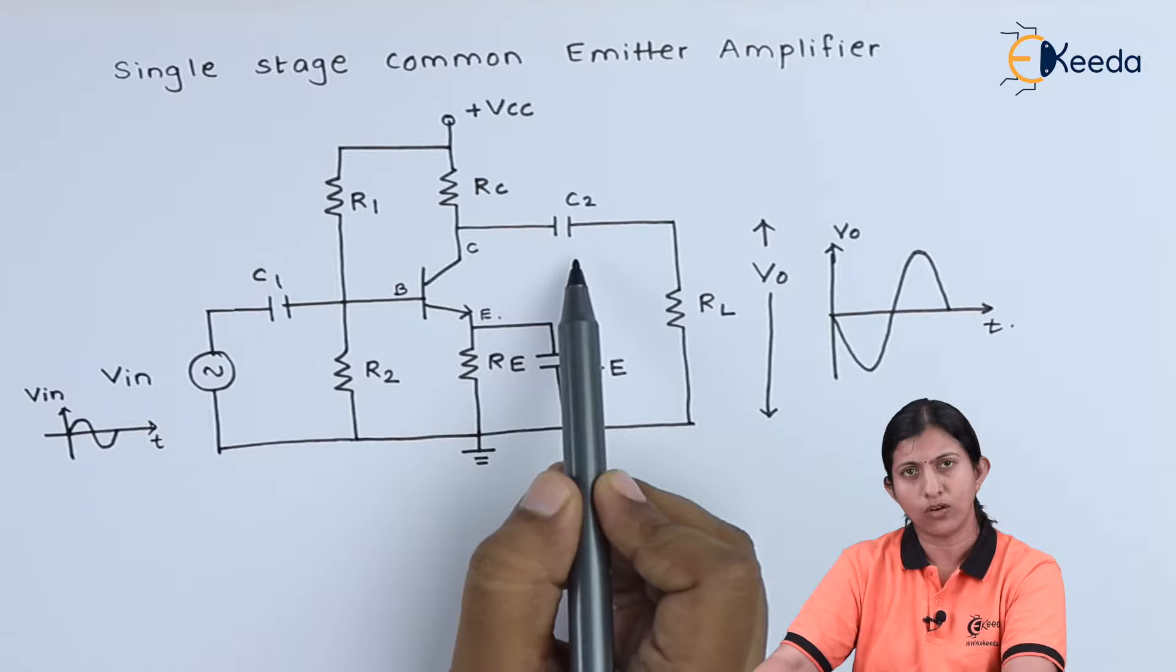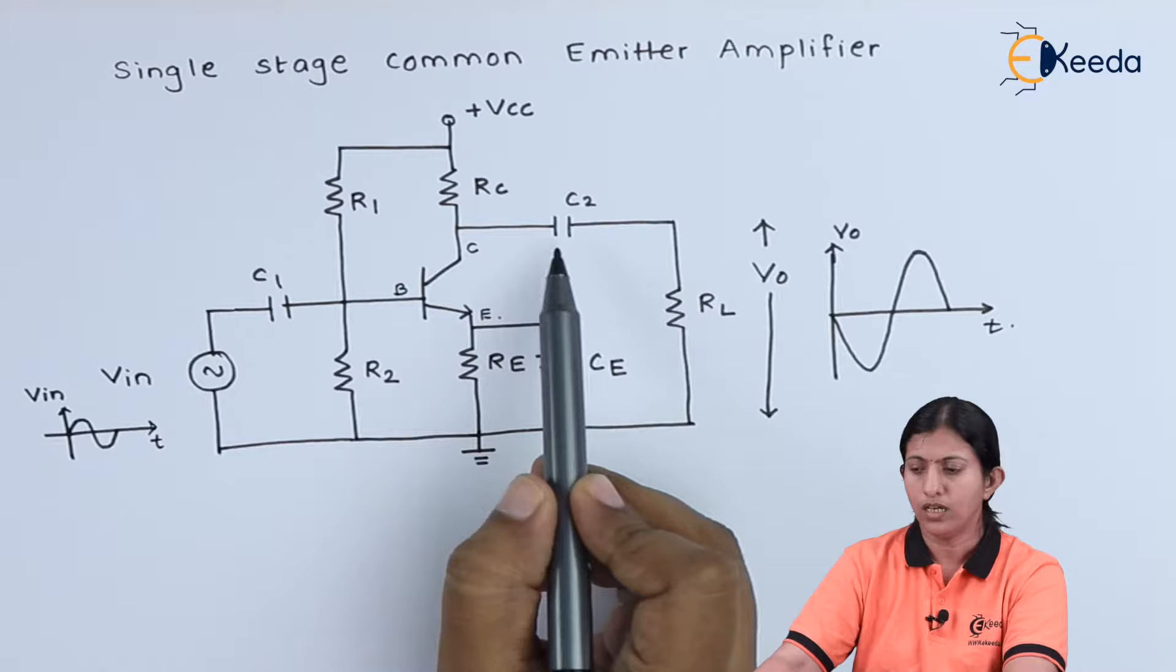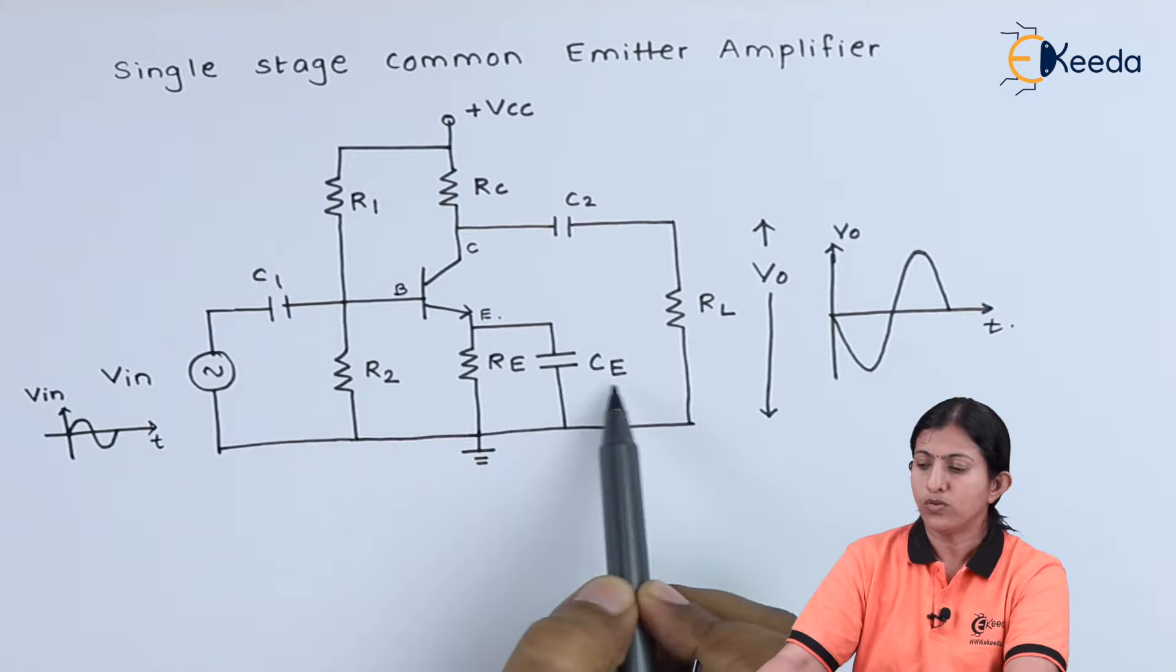Here, we are using capacitor C1 and C2 at the input and the output side. Capacitor C1 couples the input to the base terminal of the transistor and capacitor C2 couples the output to the load resistor.